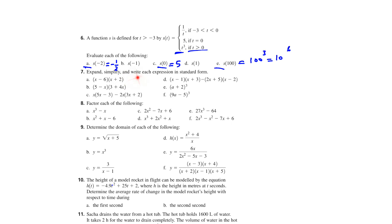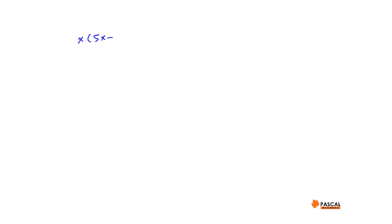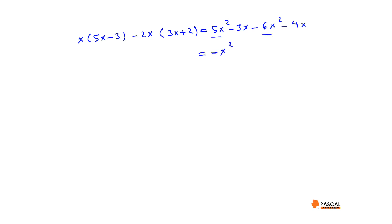Question 7: Expand and simplify each of the following expressions in standard form. Let's do parts C and E. Part C: x times (5x minus 3) minus 2x times (3x plus 2). Expanding: x times (5x minus 3) is 5x² minus 3x, and minus 2x times (3x plus 2) is minus 6x² minus 4x. Collecting like terms, we have negative x² minus 7x as the final answer.